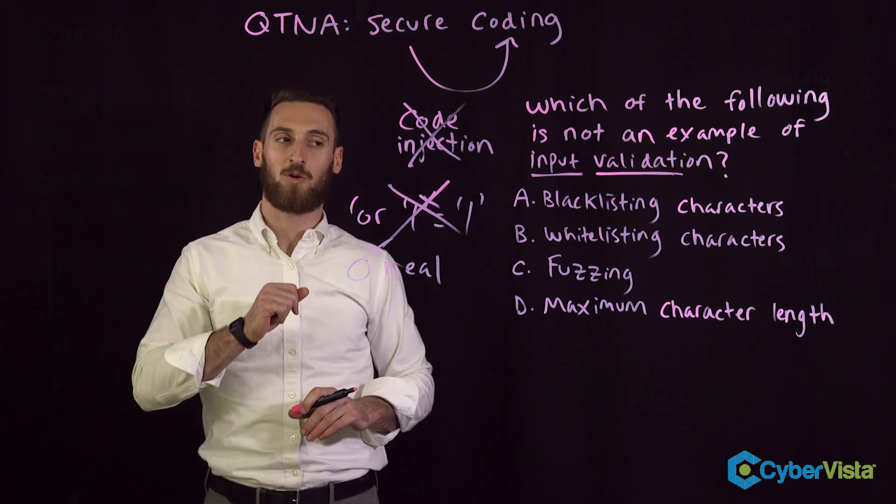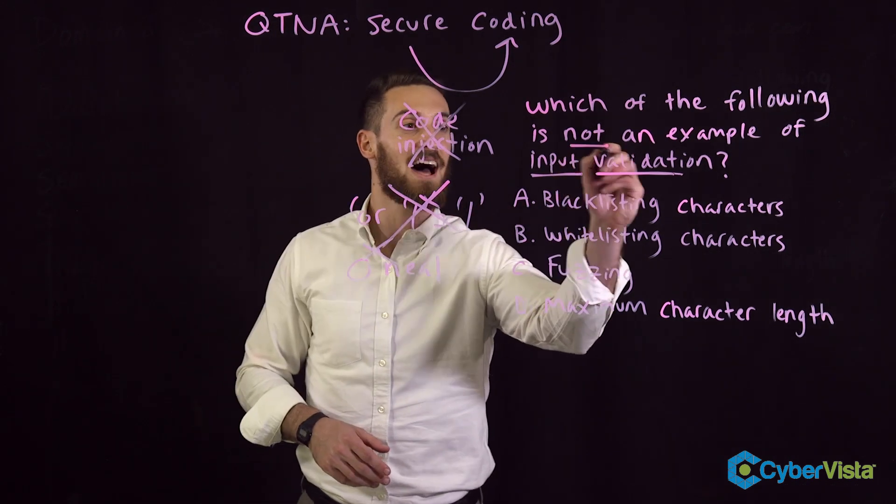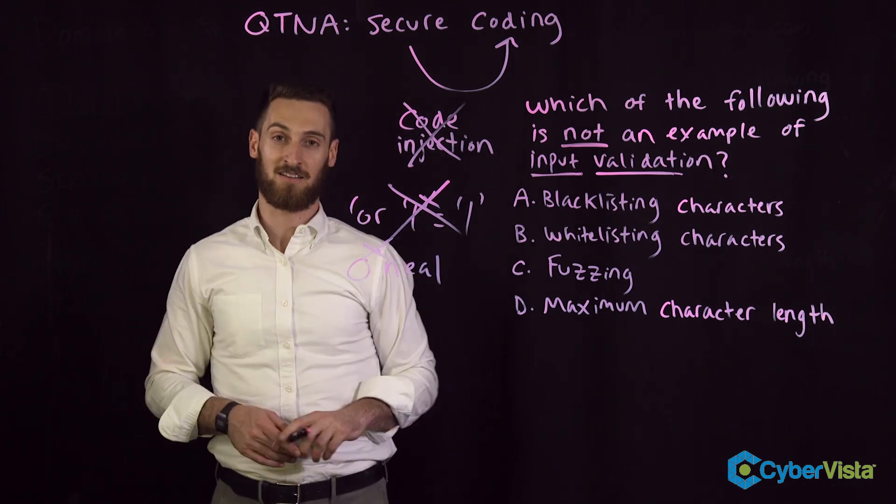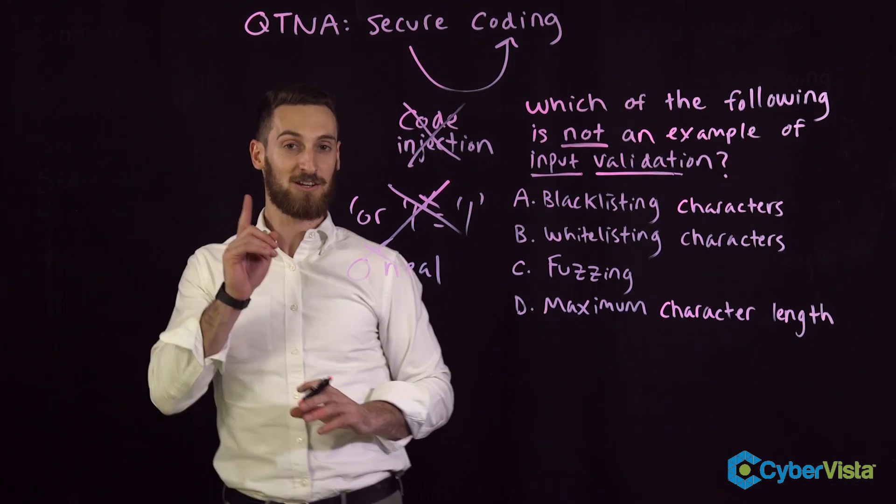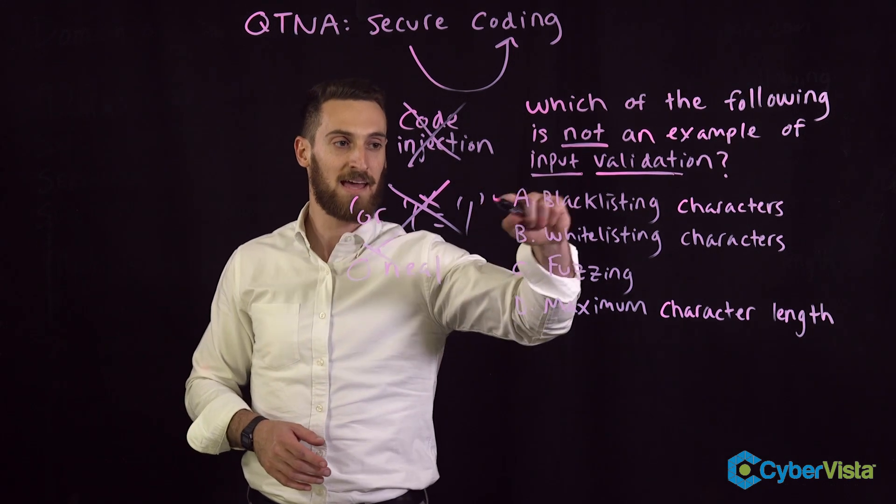Of course, the answer is not blacklisting. I just read the question wrong. Which of the following is not an example of input validation. So that's a lesson to you guys - read the question carefully. If I missed the word 'not,' I would have picked A and moved on.